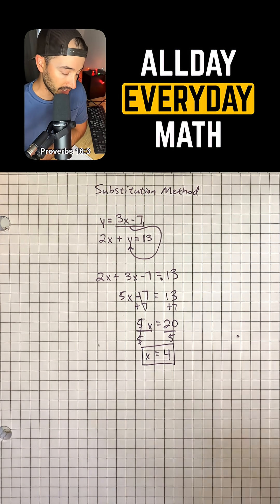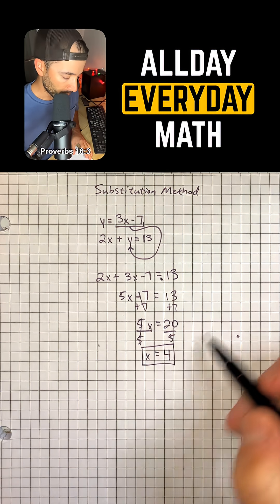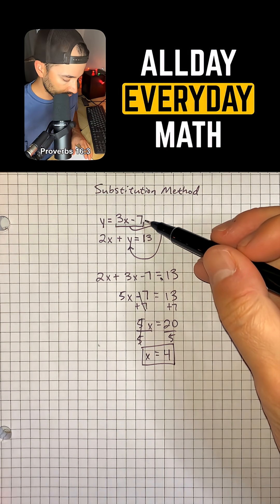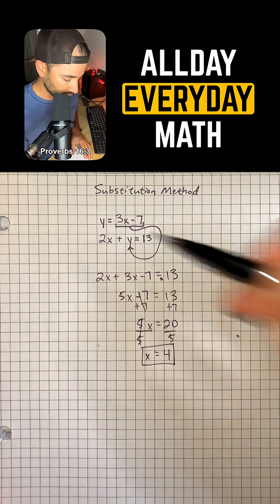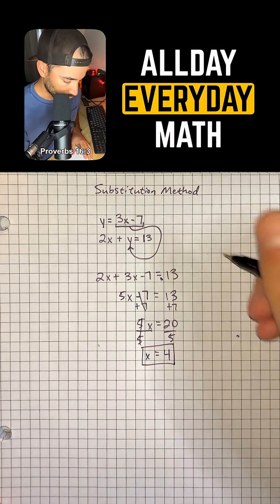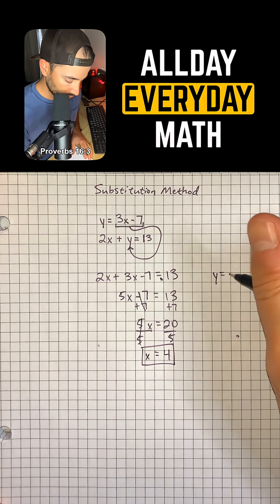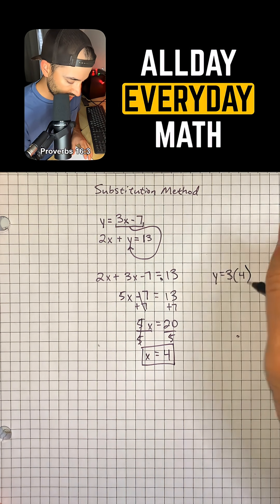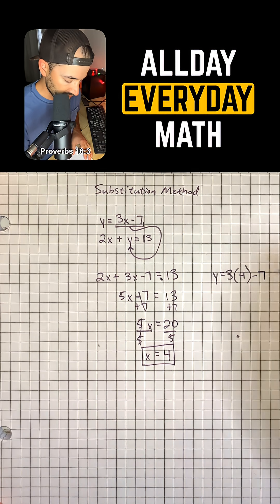Now that we know what x is equal to, we can go back to our first original equation and just plug in 4 for x. So when we do that, we'll have y is equal to 3 times 4 minus 7.